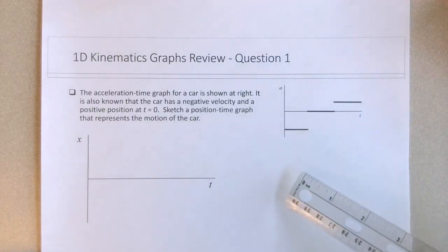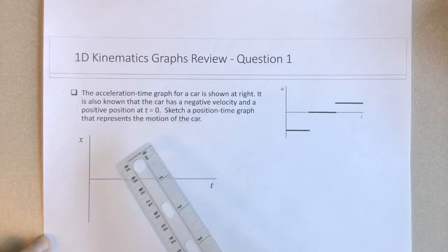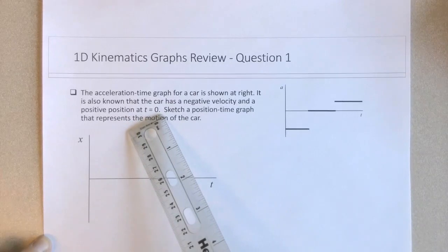So this is a challenging question. We are also given some information about the car that has initially a negative velocity and a positive position at time equals zero.